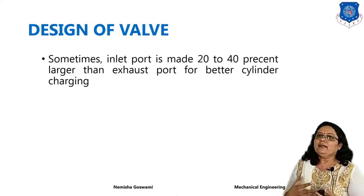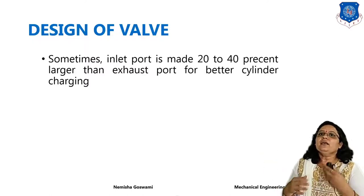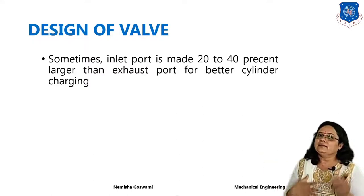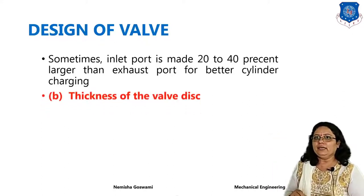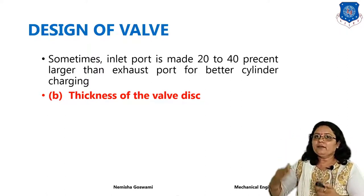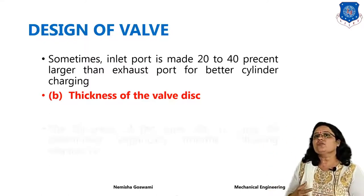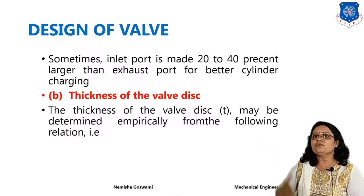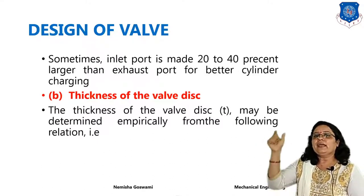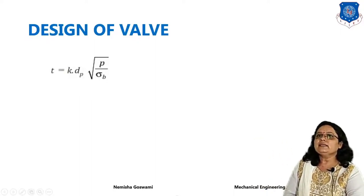The inlet port is sometimes made 20 to 40 percent larger than the exhaust port for better volumetric charging. Next, you have to find out the thickness of the valve disc, denoted by T. You can find out this value using the empirical formula: T is equal to K multiplied by Dp multiplied by the square root of P divided by sigma D.